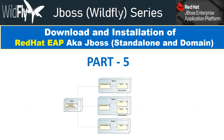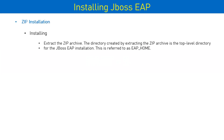We'll also see how we can start the services in standalone mode and domain mode. When we talk about the installation of JBoss EAP, which is the proprietary version from Red Hat that comes with support, there are three different options for installation — three different formats available from Red Hat EAP.